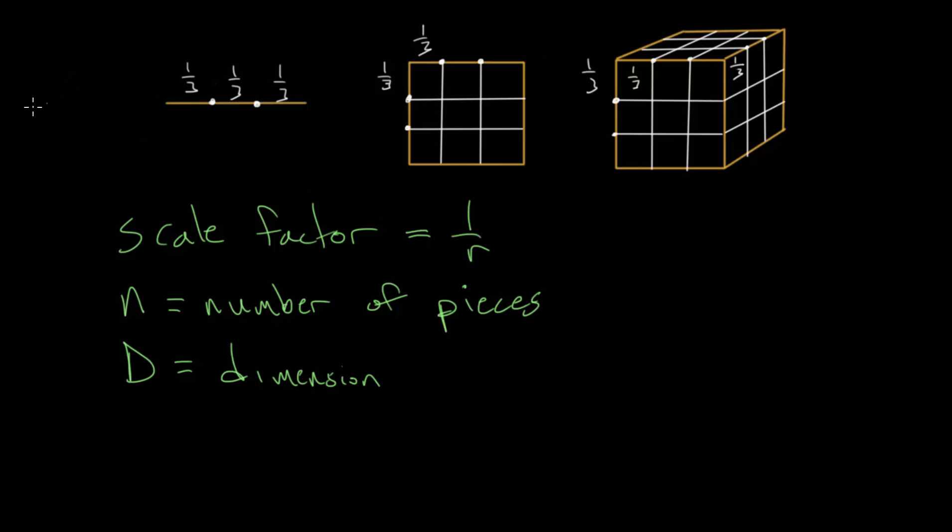And for all of these cases, we know our scale factor, this one over r is one third, meaning that r is three. We know in this case the number of pieces is also three, but the dimension is one since it's a line. And for the square, we know the dimension is two, it has that same scale factor, they all do. But in this case, the number of pieces is nine. And for the cube, we know the dimension is three, and the number of pieces we end up with is 27.